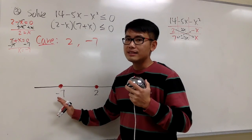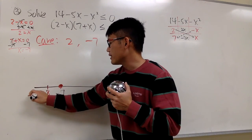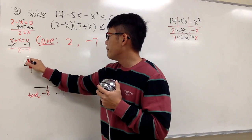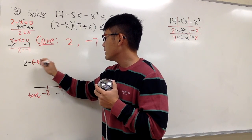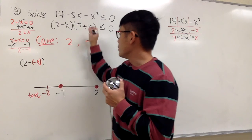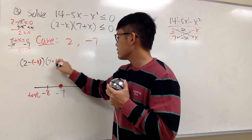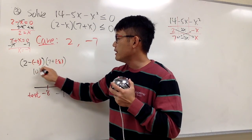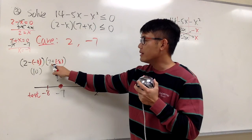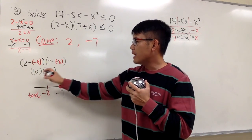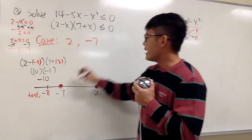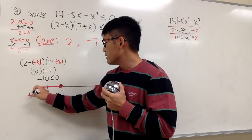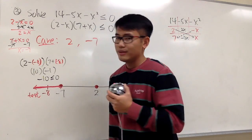Now pick a number less than negative 7 — let's say negative 8. That's our test value. Plug in negative 8 into x: we have (2 minus negative 8) times (7 plus negative 8). For the first parentheses, that's the same as 2 plus 8, which is 10. For the second one, that's 7 minus 8, which is negative 1. 10 times negative 1 is negative 10. Is this less than or equal to 0? Yes, it is. So we take this interval as part of our answer.